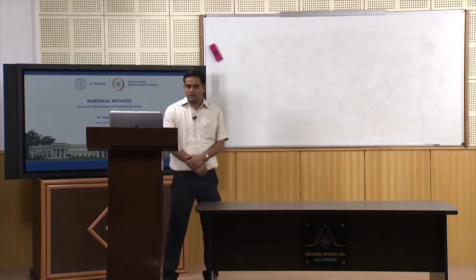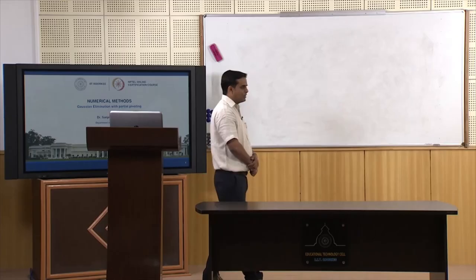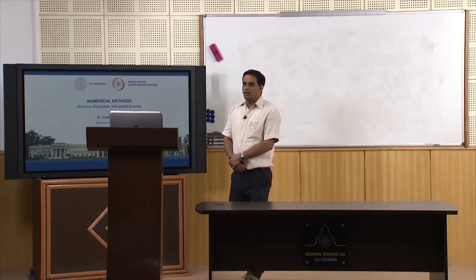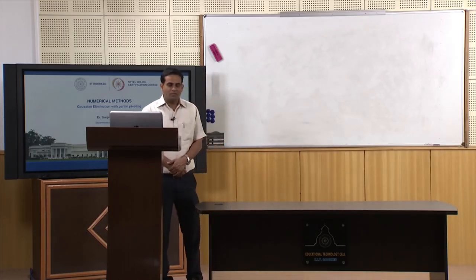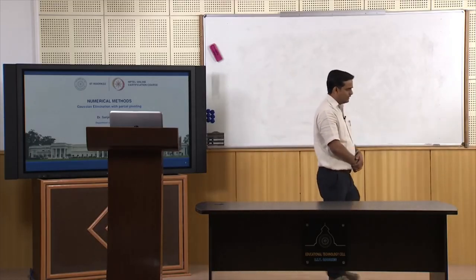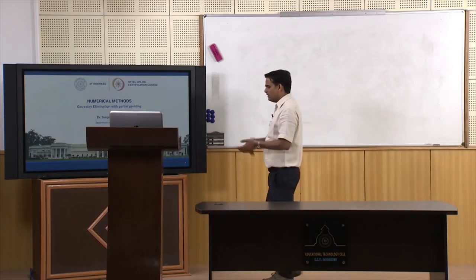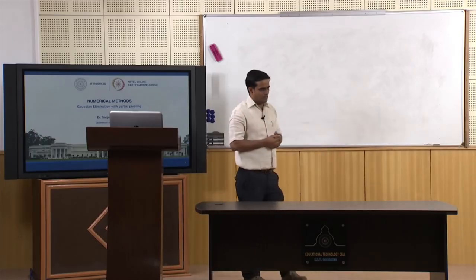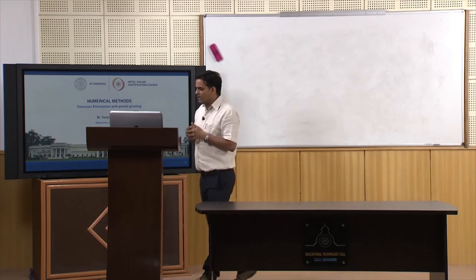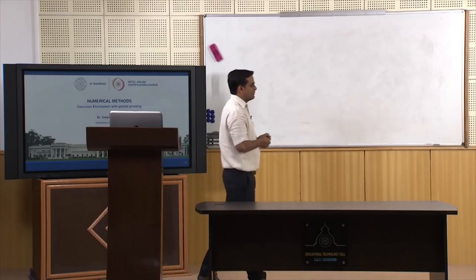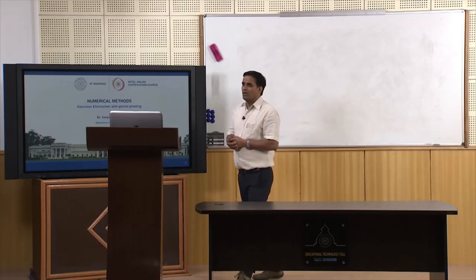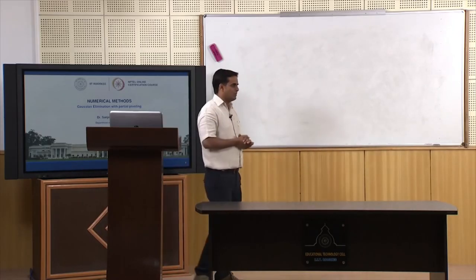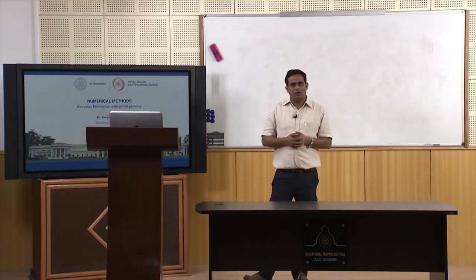Hello everyone. This is the third lecture of this course and today I am going to introduce you another direct method for solving a linear system, called LU decomposition. The idea of this method is the same as in Gaussian elimination — to convert the coefficient matrix into a triangular matrix. However, here the idea is to write the coefficient matrix as a product of lower and upper triangular matrices, and then solve the linear system using forward followed by back substitution.